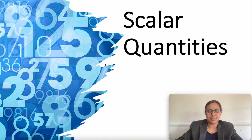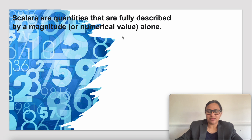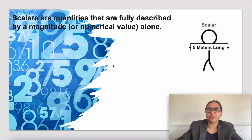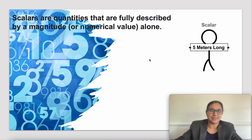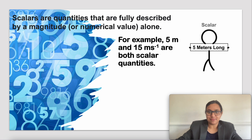What are scalar quantities? Scalar quantities are fully described by a magnitude or a numerical value alone. For example, as you can see here, '5 meter long' — here 5 indicates the magnitude of this quantity. Another example: 15 meter per second, where meter per second indicates speed, so 15 is the magnitude here.